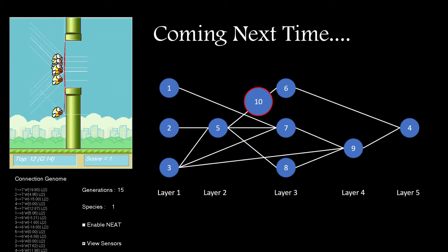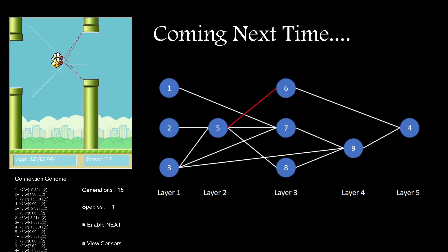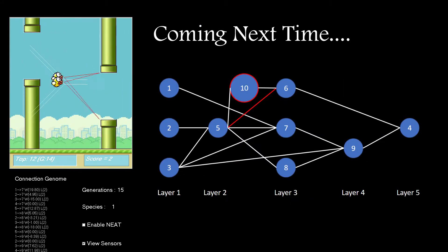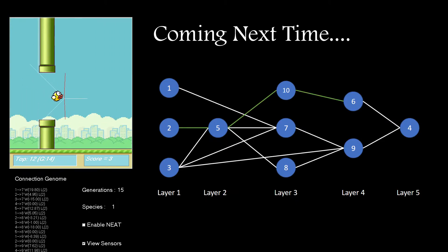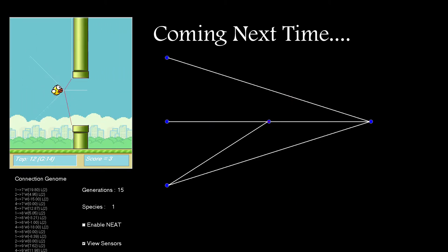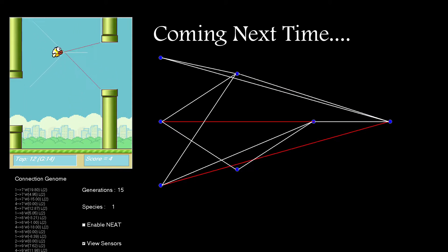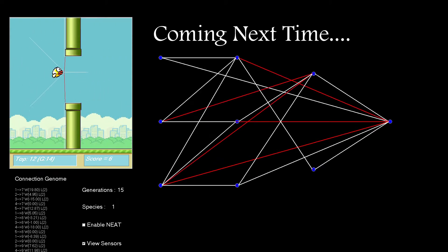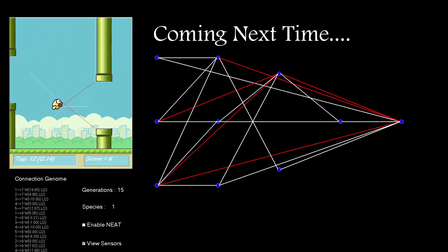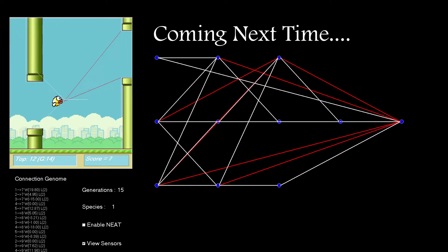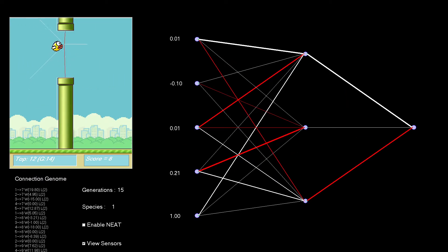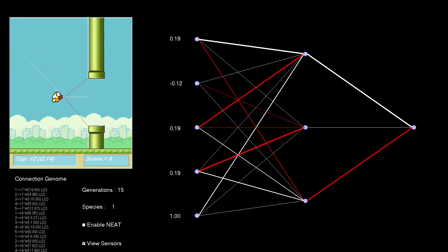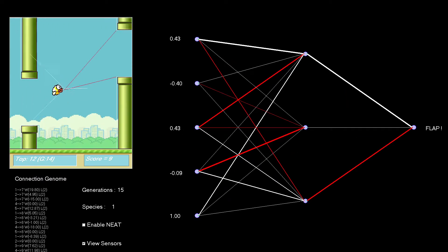Thanks for watching. In the next video, I'll get the network to evolve its own shape by adding nodes and connections, and we'll see if that makes a difference. Please subscribe, it really helps, and I'll leave you with a couple of minutes of the birds getting to a score of over 200.